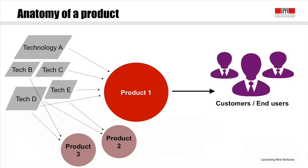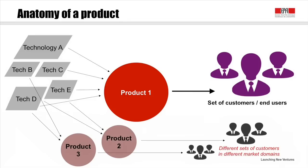From a technology entrepreneur's perspective, your underlying competences and technology can actually be used to cater to multiple market domains — and that's beautiful because many of these domains might be better than the one you thought of. This product is based on A, C, E, and D. E is also used in the second product, and B is also used in the third one along with D. So that gives you a lot of flexibility in your venture creation, because your technology is fungible and can render purposes for multiple sets of customers.